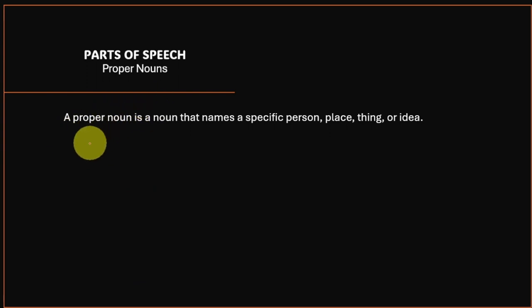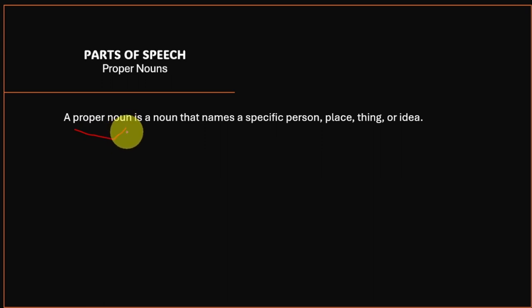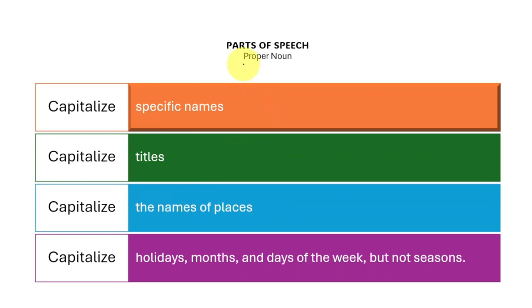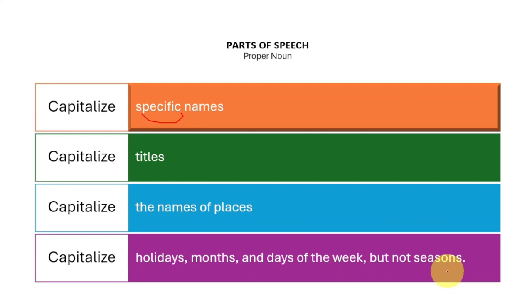I'm going to focus on the proper noun. A proper noun is a noun that names a specific person, place, thing, or idea. You have to be careful: the title, the name of the place, holiday, month, and days of the week — we capitalize them. Not the season. If we say winter, summer, spring, fall — we don't capitalize them.